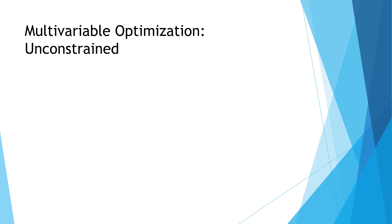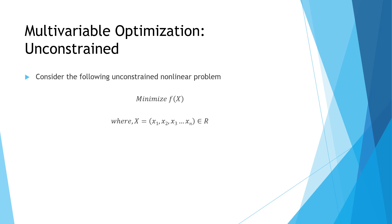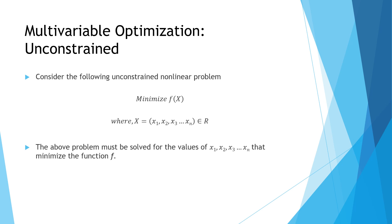Consider this unconstrained nonlinear problem: minimize a function of capital X, where X is a vector containing variables x1, x2, x3 up to xn — it can have any number of variables — and they all lie within the range of real numbers. The problem is solved to find the values of x1, x2 up to xn such that these values will minimize the value of the function.